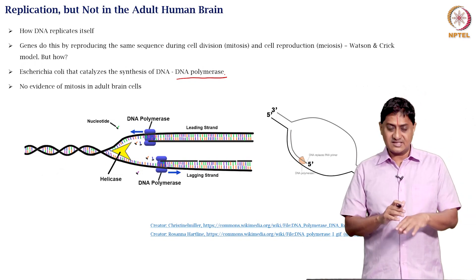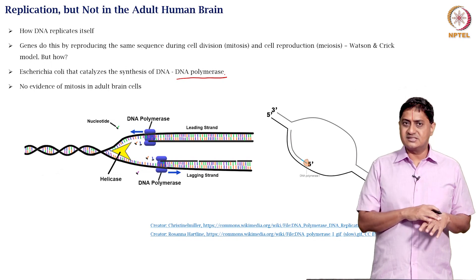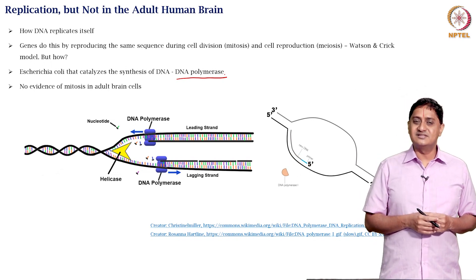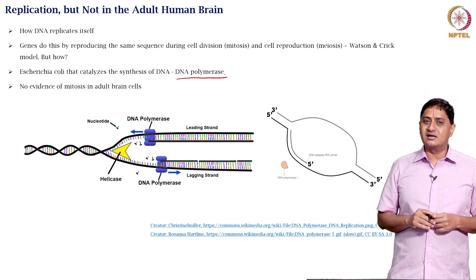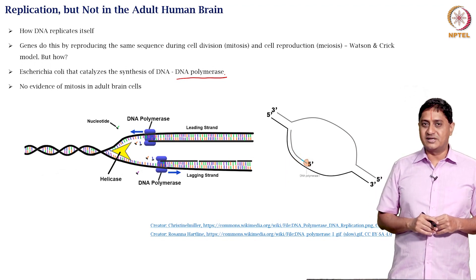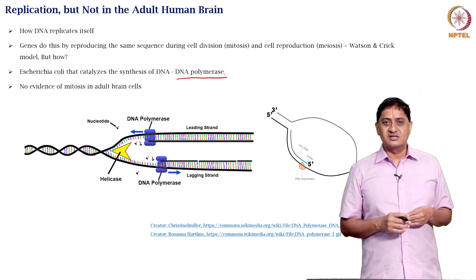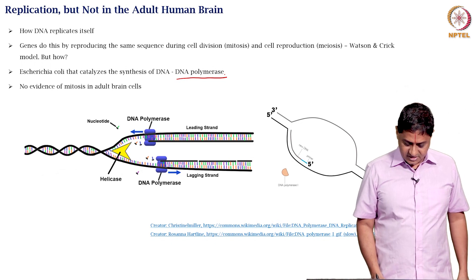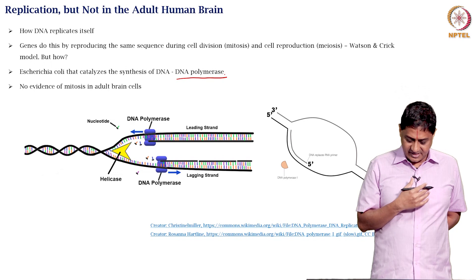There is regeneration of this tissue, but somehow this is not happening in the adult brain cells. Why? That question continues till date. We still are studying why replication is turned off for adult brain cells.